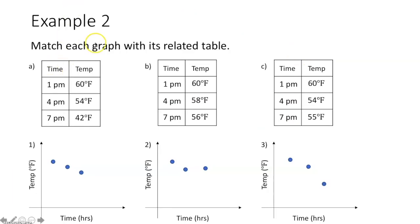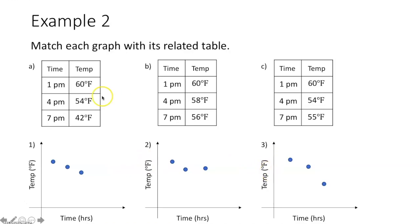Example 2 says: match each graph with its related tables. The independent variable for each of these tables and graphs is time, and the dependent variable is temperature.